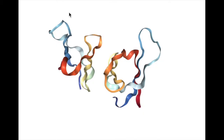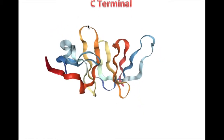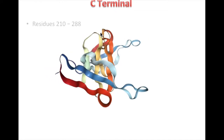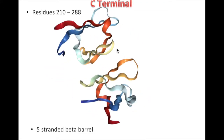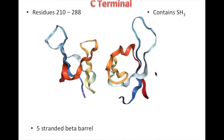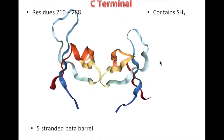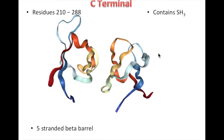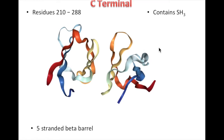The C-terminal contains residues 210 through 288 and is composed of a five-stranded beta barrel. The C-terminal also contains an SH3 domain, which allows it to nonspecifically bind DNA. It also contains a saddle-shaped cleft created by positively charged residues. The design of this area works well to interact and bind with the double-stranded DNA of the host cell.